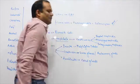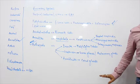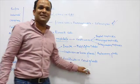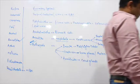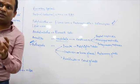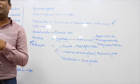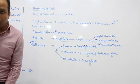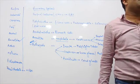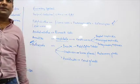In Arachnida, the excretory organs are coxal glands. A helpful mnemonic: C for Crustacean, C for coxal gland — wait, actually A for Arachnida, A for antennal gland; and C for Crustacean means green/antennal glands. Coxal glands are located in the coxa, which is one of the five parts of the arthropod leg.